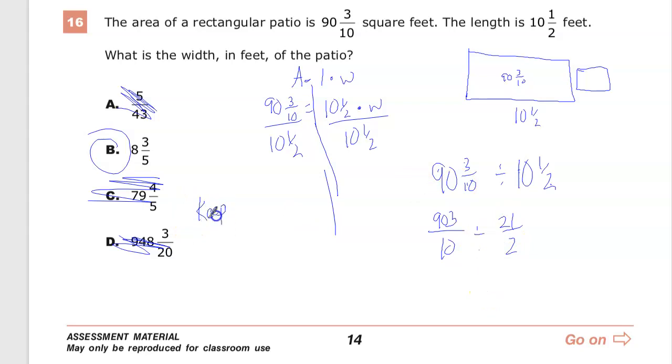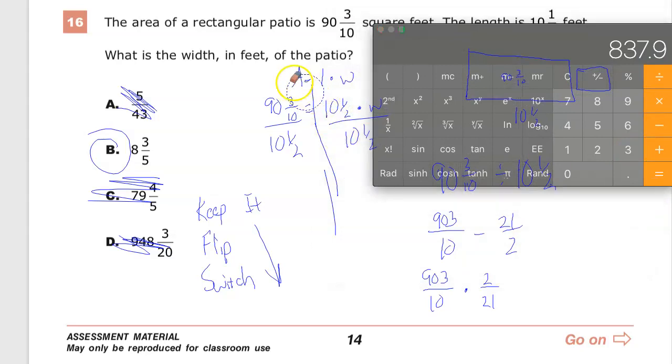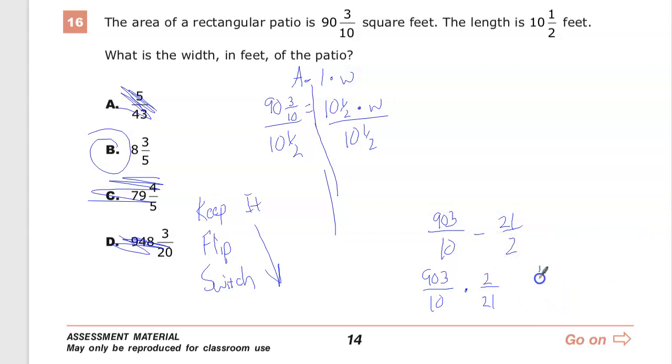And then I'll do keep it, flip it, switch it. We'll just call it keep, flip, switch because I'm already a few minutes into this thing. So keep it, flip it, switch it. So keep this one, flip this one, switch it to multiply. And then you'll end up going over here. I'm going to do 903 times 2, which is 1806. And then I'll have to do 21 times 10, which is 210.